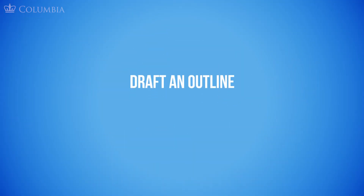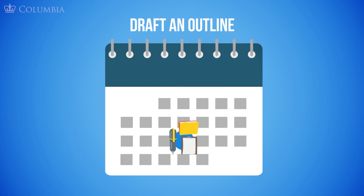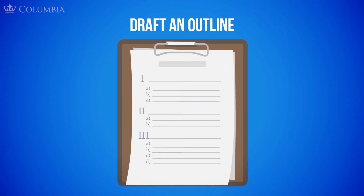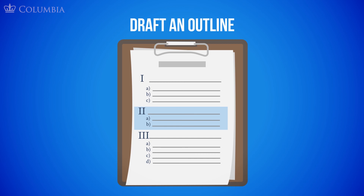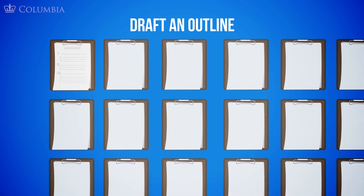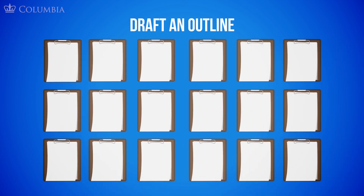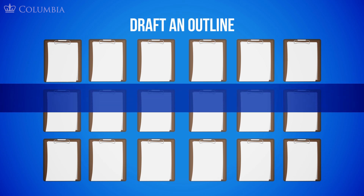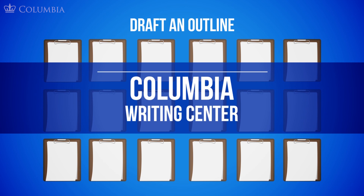Draft an outline. From the research and notes you've gathered, start to develop a unique argument by drafting an outline. Try including this activity as a target goal in your project timeline. Drafting an outline will help you position your argument and insert your ideas within the scholarship. It will also illuminate areas in your argument where you might need more sources to prove your point, resulting in a better informed research paper. There is no one-size-fits-all formula for drafting an outline or even drafting your final paper. For additional support in drafting and writing your research papers, please reach out to the Columbia Writing Center, where you will have access to experts and resources that can help you with your academic writing journey.